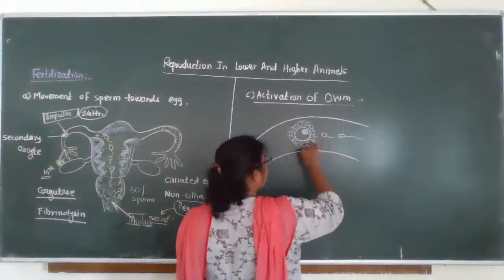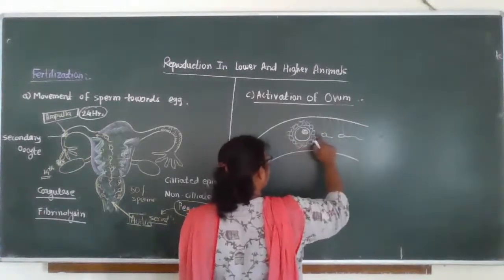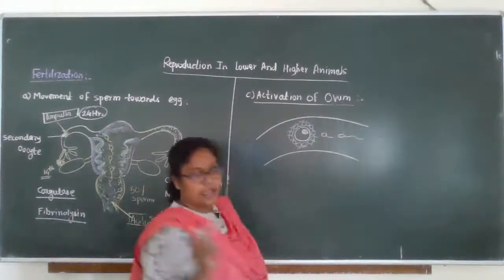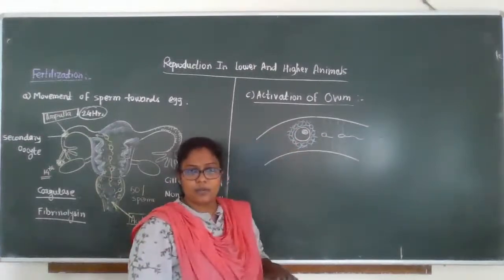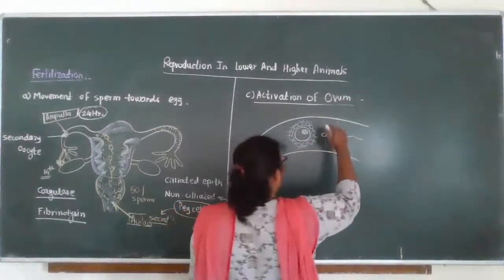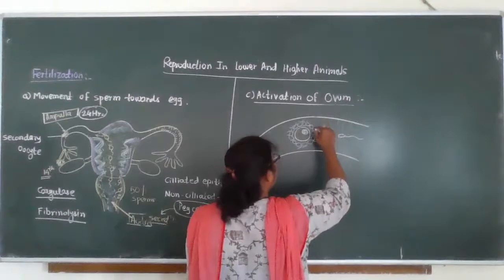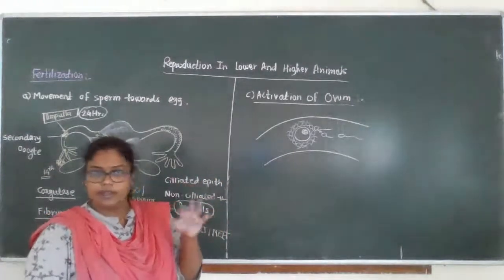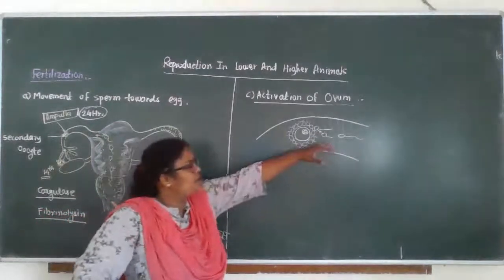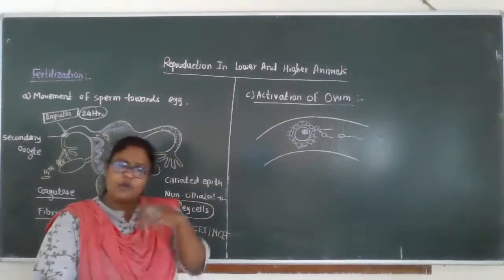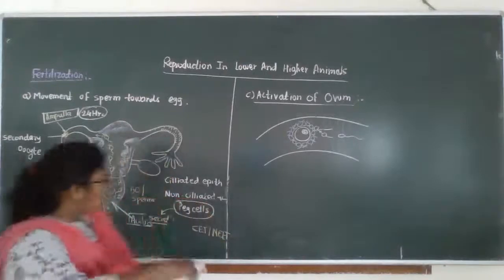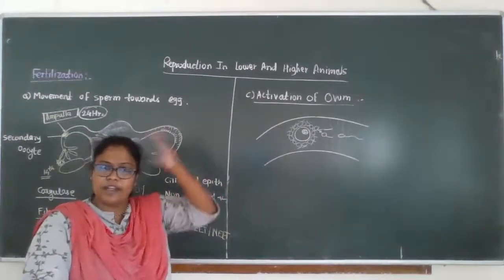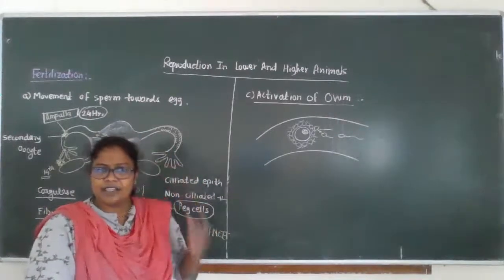The animal pole site is where the first polar body and the nucleus of the secondary oocyte are present. The site opposite to it is called the vegetal pole site. The sperm which comes first prefers the animal pole site to bind. The sperm which reaches the secondary oocyte must be capacitated, and it gets capacitated by the fluids present in the reproductive tract — conditioning the head of the sperm and releasing all unnecessary material present on it.